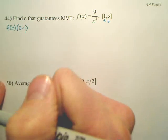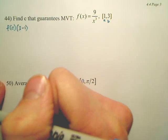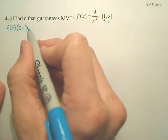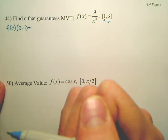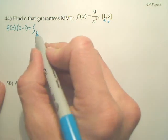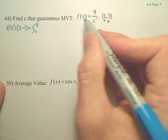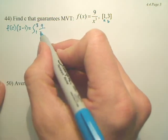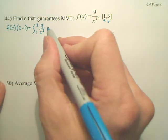So 3 minus 1 is equal to the area under the curve, or the integral from 1 to 3. The function is 9 over x to the 3rd, and it's dx.